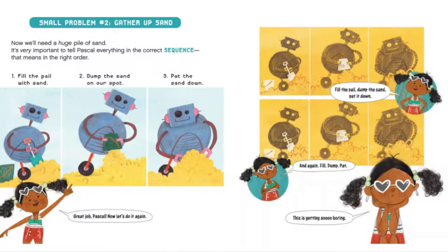Small problem number two: gather up sand. Now we need a huge pile of sand. It's very important to tell Pascal everything in the correct sequence — that means in the right order. Number one: fill the pail with sand. Number two: dump the sand on our spot. Number three: pat the sand down. Great job, Pascal!